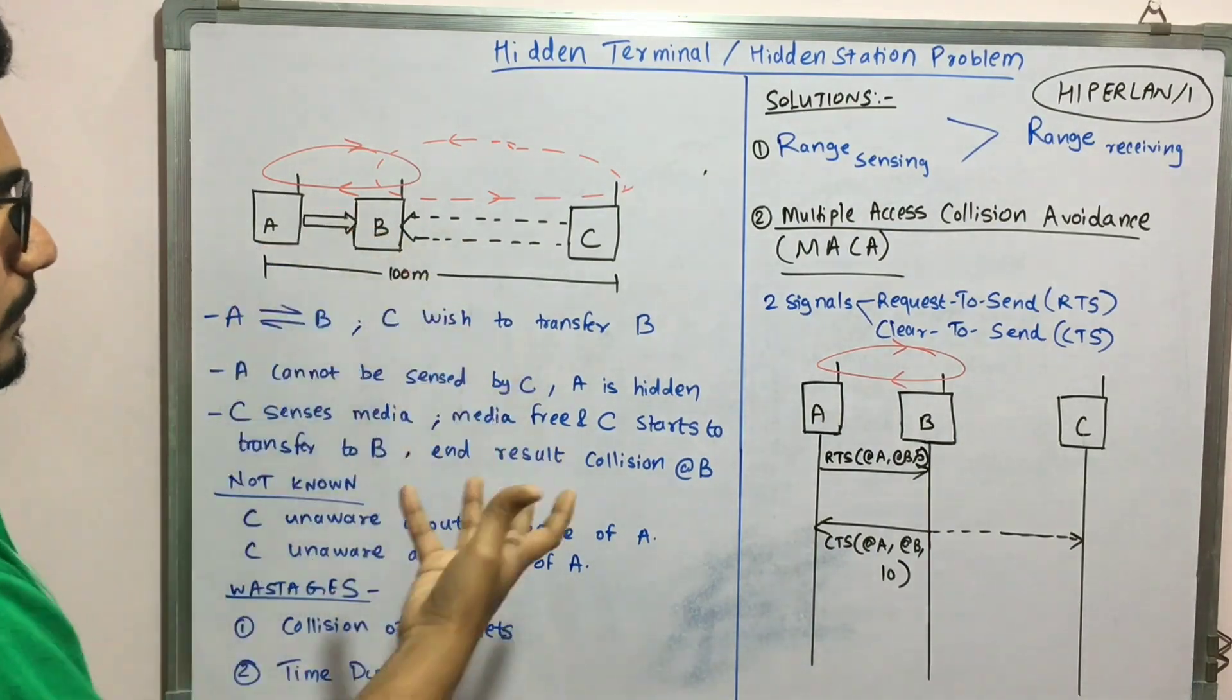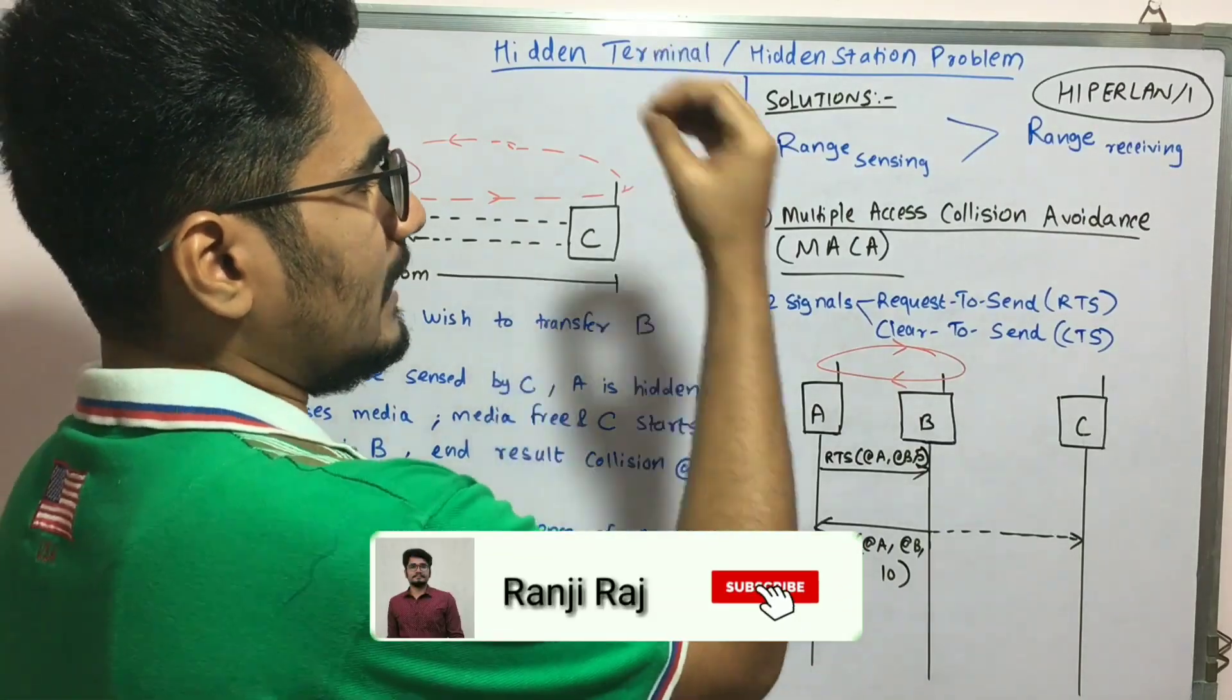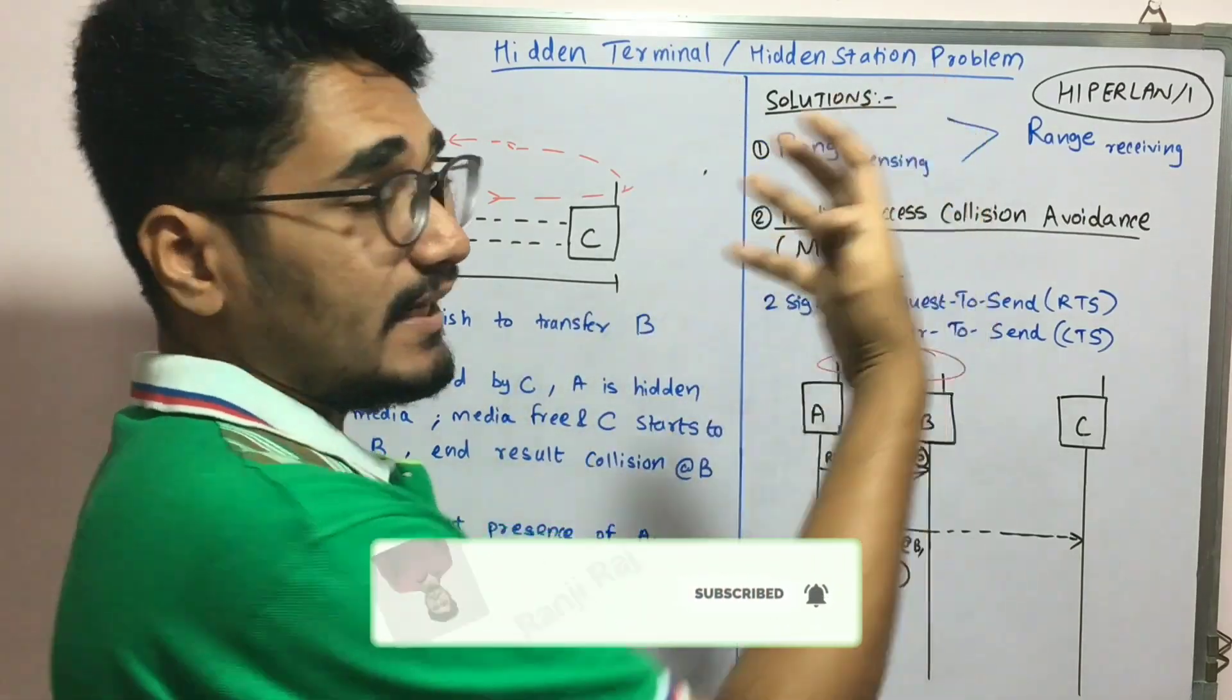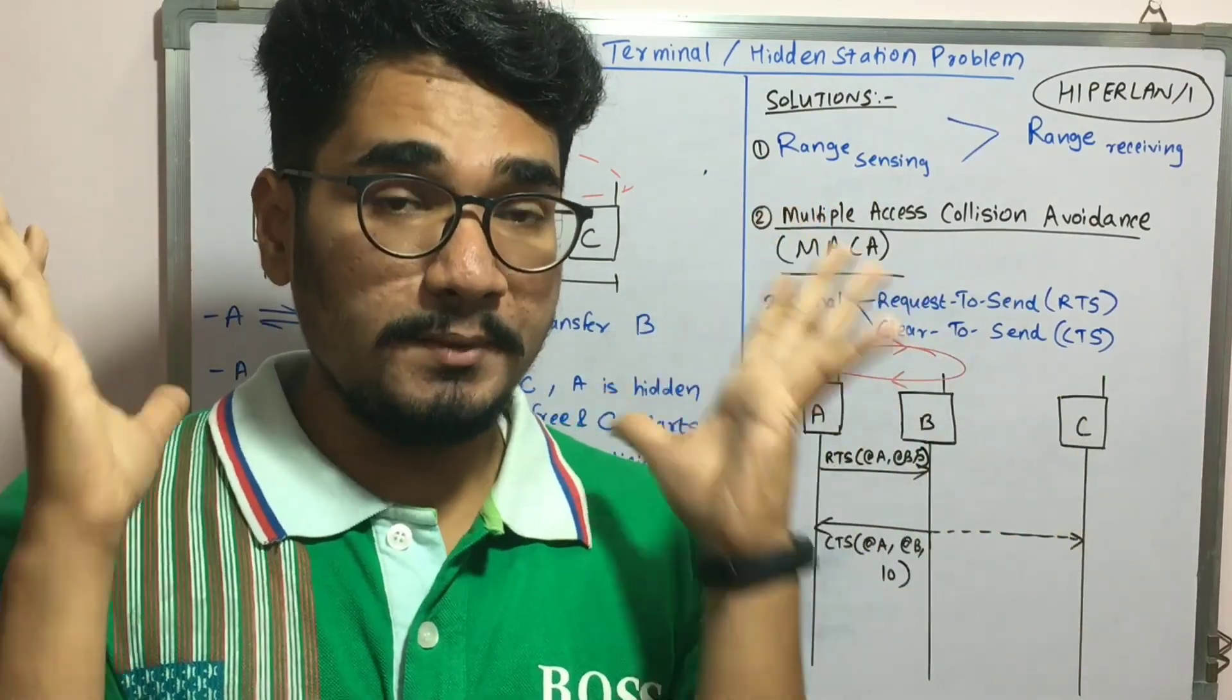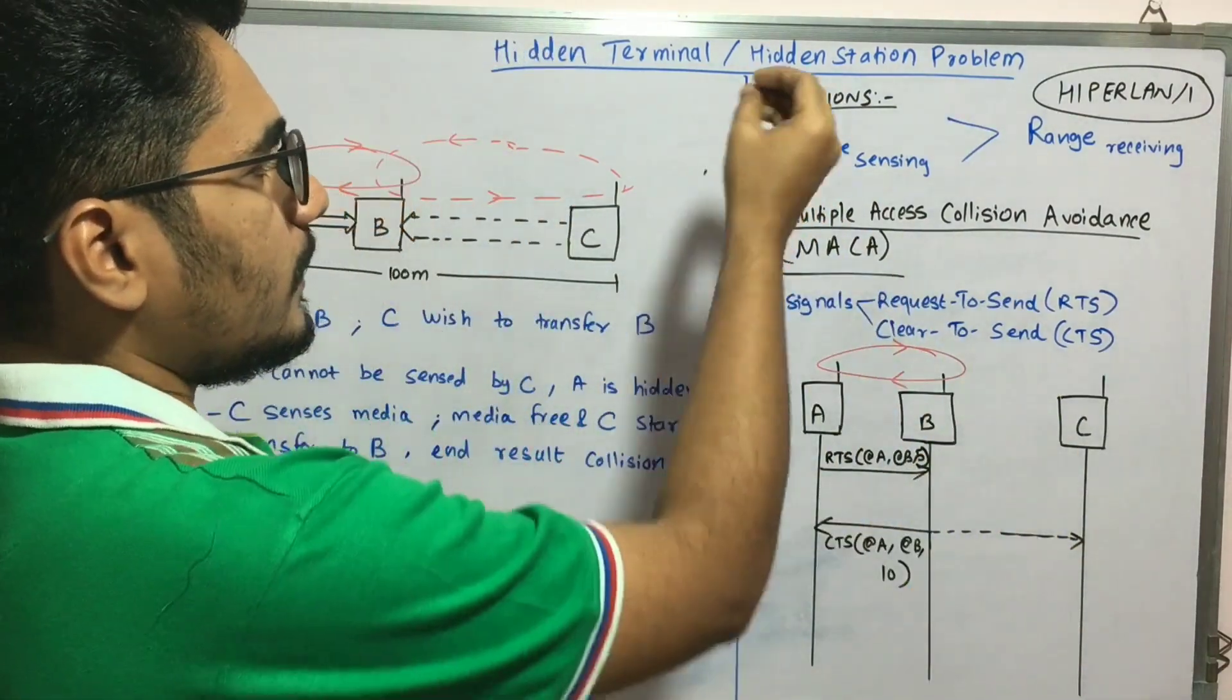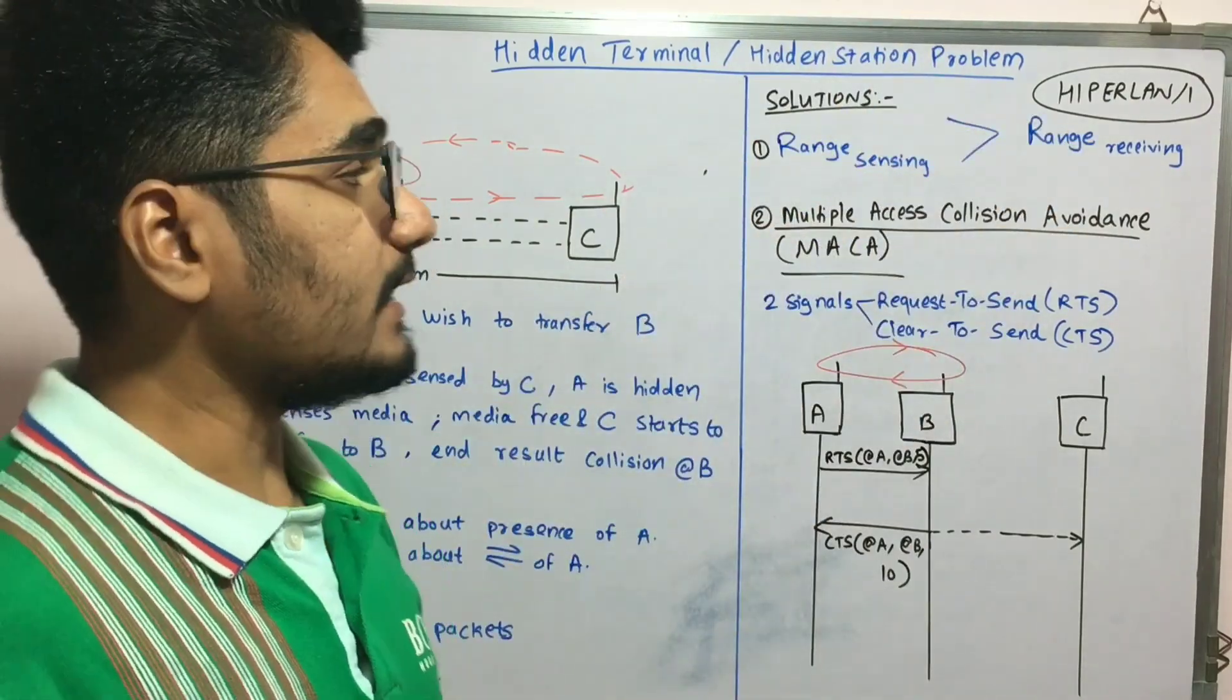We cannot let this problem go, so we have certain solutions. The range of sensing should be greater than the receiving range, meaning your understanding level should be much greater. It's mostly used in the hyperland, that is high performance radio local area networks.